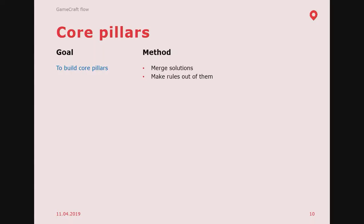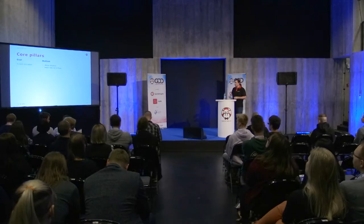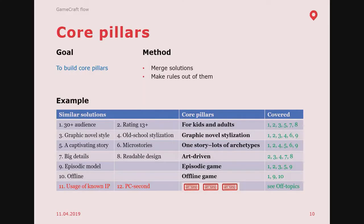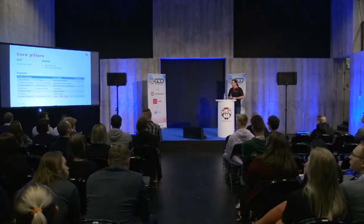Now, core pillars. You merge these solutions at an abstract level to create a foundation for your game. You take the closest solutions and merge them. For audience: since it's for both adults and kids, the core pillar is 'for kids and adults,' meaning in design, development, and marketing you must address both. You cannot go below rating 13 or make anything 18-plus — the core pillar cannot be overridden.